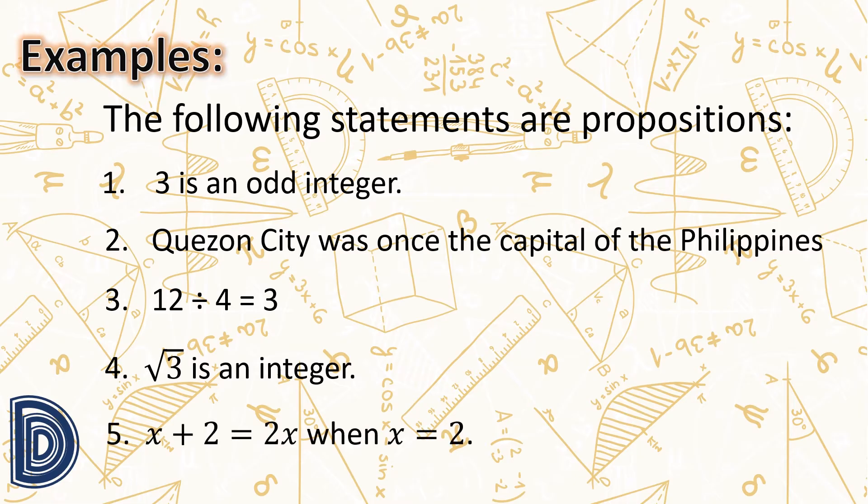Number five: 'x plus two equals two x when x equals two.' This is a declarative sentence, and this is true, because the value of x is identified or defined.